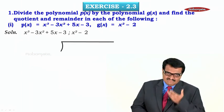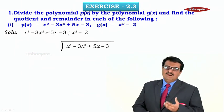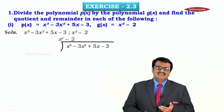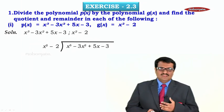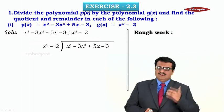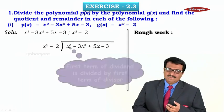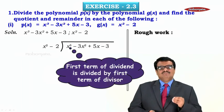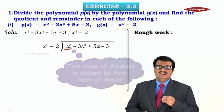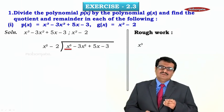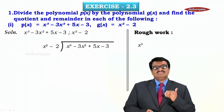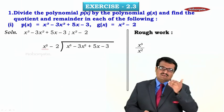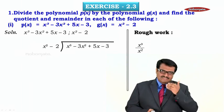We will perform the division. Inside we write the dividend: x³ − 3x² + 5x − 3, and outside we write the divisor: x² − 2. The first term of the dividend is divided by the first term of the divisor. The first term of the dividend is x³, and the first term of the divisor is x². Dividing x³ by x² gives x.